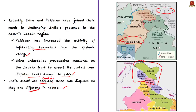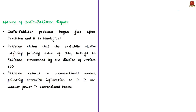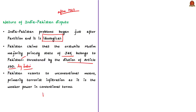Let us see a brief history of these border disputes, especially useful for freshers. India-Pakistan problems began just after partition in 1947. Pakistan's dispute with India is an ideological dispute — it has claimed that the erstwhile Muslim-majority princely state of Jammu and Kashmir legitimately belongs to Pakistan. The latest threat to this claim was the dilution of Article 370 by India. Since Pakistan is a weak military power, it has resorted to unconventional means like terrorist infiltration along the Line of Control using non-state actors.